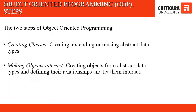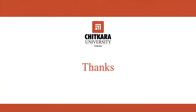What are the two steps of object-oriented programming? The first step is creating classes — without creating classes you cannot create objects. Creating classes means creating, extending, or reusing abstract data types. The second step is making objects interact — creating objects from abstract data types, defining their relationships, and letting them interact. With this understanding of what a class and an object are in OOP, we can dive deeper into the concepts. This is it for this session — thank you.